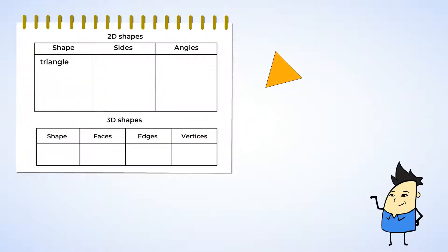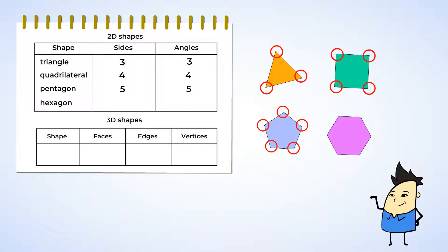A triangle is a 2D shape with 3 sides and 3 angles. A quadrilateral has 4 sides and 4 angles. A pentagon has 5 sides and 5 angles. And our final 2D shape for now is a hexagon, and it has 6 sides and 6 angles.